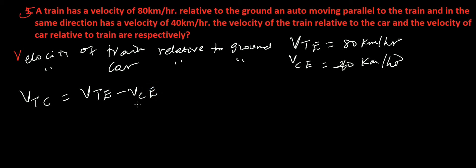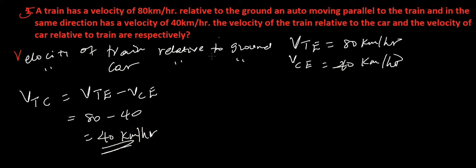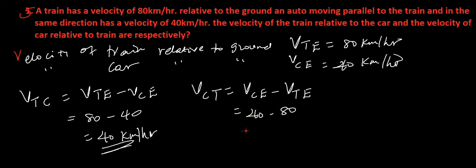Train with respect to ground minus car with respect to ground. Velocity of train with respect to car equals 80 minus 40, which is 40 km per hour. Velocity of car with respect to train equals velocity of car with respect to ground minus velocity of train with respect to ground, which is 40 minus 80, equal to negative 40 km per hour.